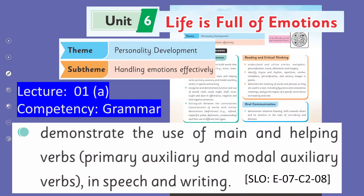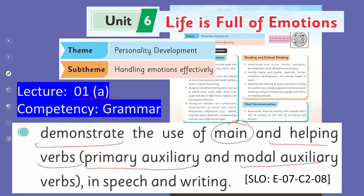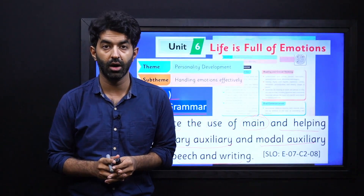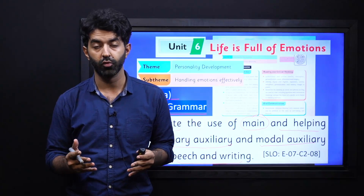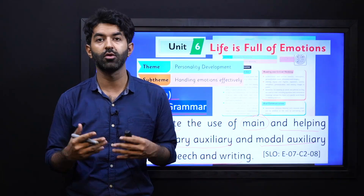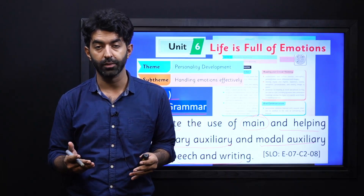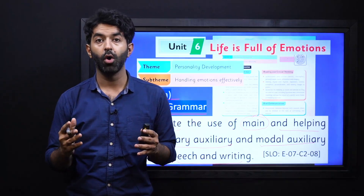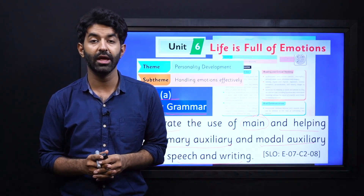This is the very first lecture of our unit number 6. This is about grammar and our SLO says: demonstrate the use of main and helping verbs, and those include primary auxiliary and modal auxiliary verbs in speech and writing. So first in this lesson, students, we will mainly focus on our auxiliary verbs or helping verbs. We will see them as main verbs and also as helping verbs. We will talk about the modal auxiliary verbs in the next lesson.